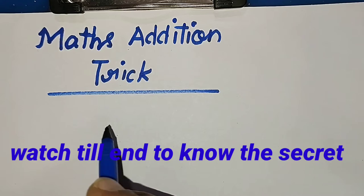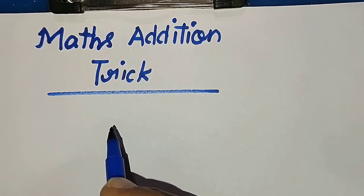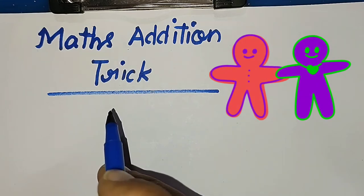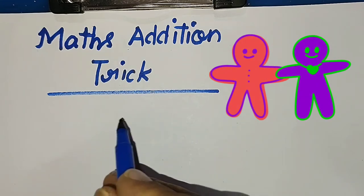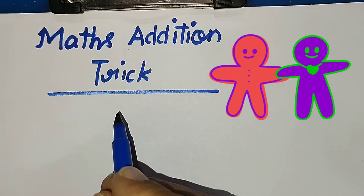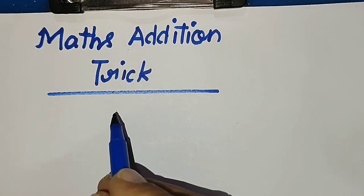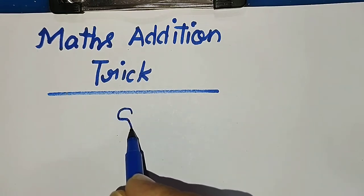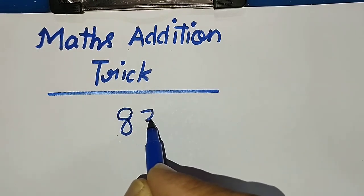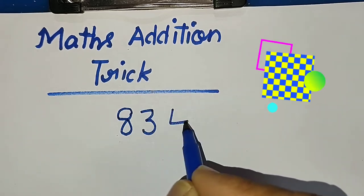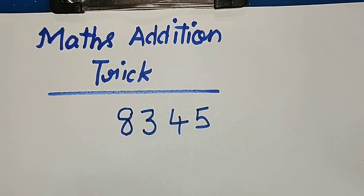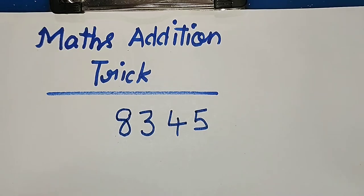This is a game between you and your friend. First, you ask your friend to write a number. Suppose he writes a number like this: 8345. This may be a random number, whatever number it may be. Then ask him to write another number.